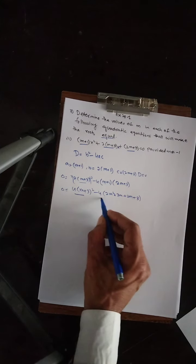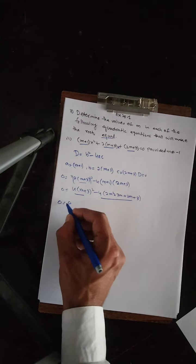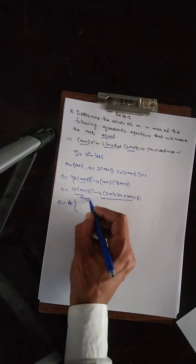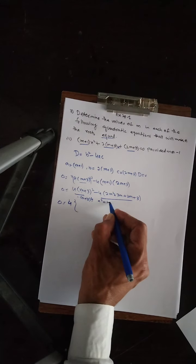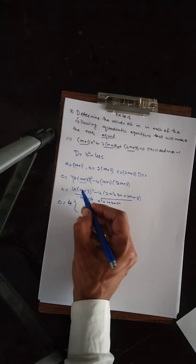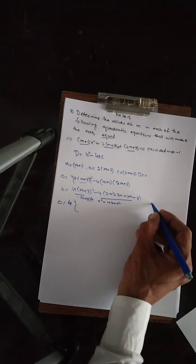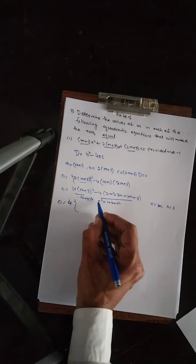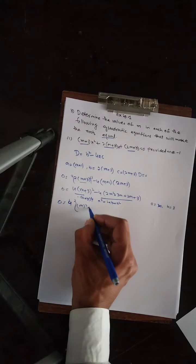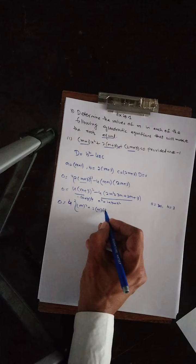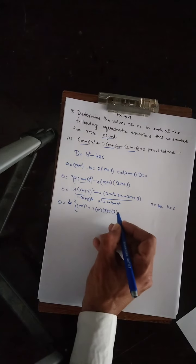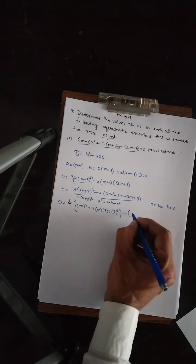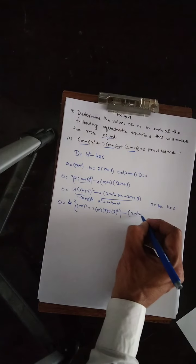Taking 4 as common. Using the formula A plus B whole square equals A² plus 2AB plus B². Where A is replaced by M and B is replaced by 3. So in the formula, wherever A appears put M, and wherever B appears put 3. B squared becomes 3 squared.